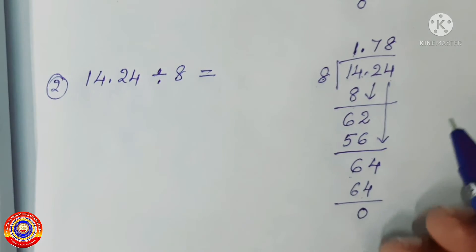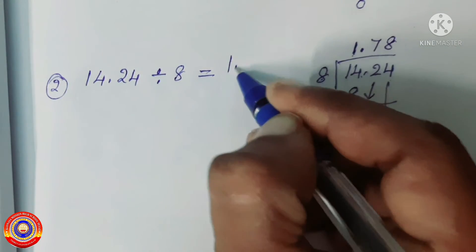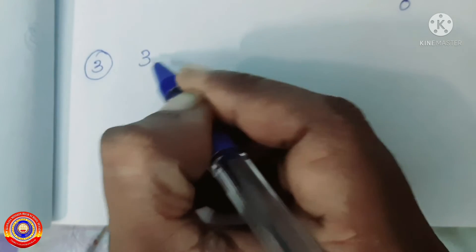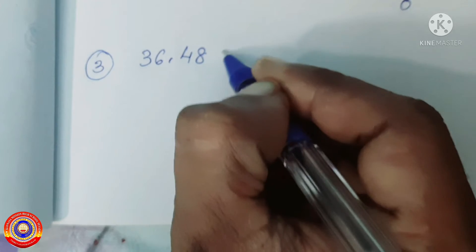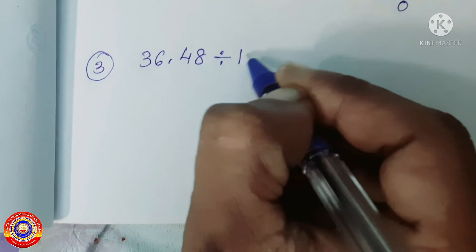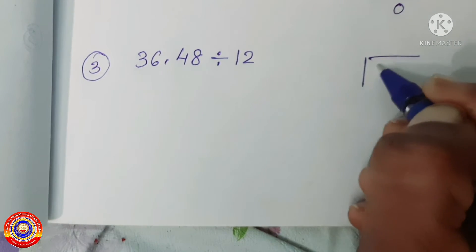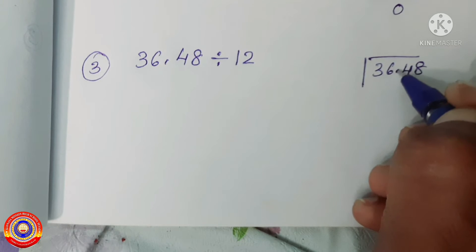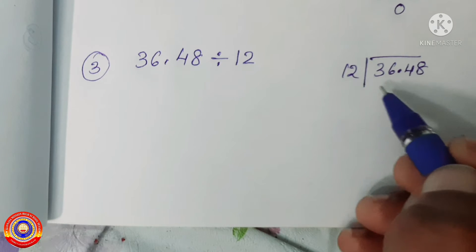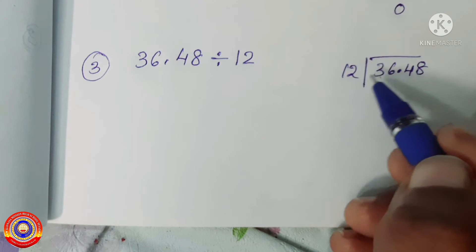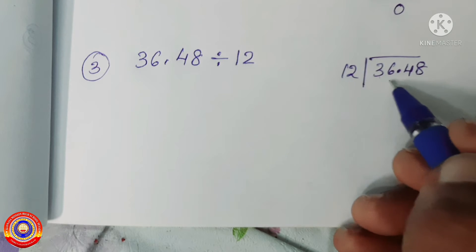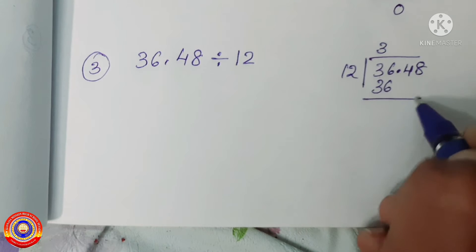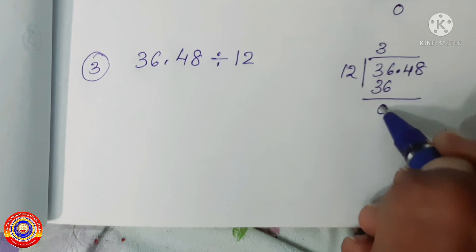Therefore, 14.24 divided by 8 is equal to 1.78. Is it clear for you? Next question: 36.48 divided by 12. Divide the numbers one by one — we can't divide 3 by 12, so take the next number also. Then 3 will become 36. 36 divided by 12 is equal to 3, and 12 into 3 is equal to 36. 36 minus 36 is equal to 0.